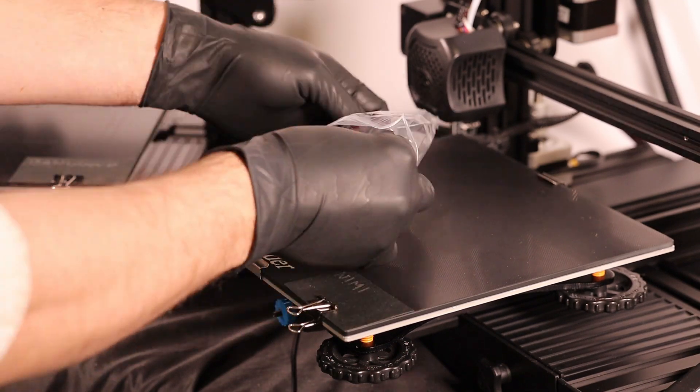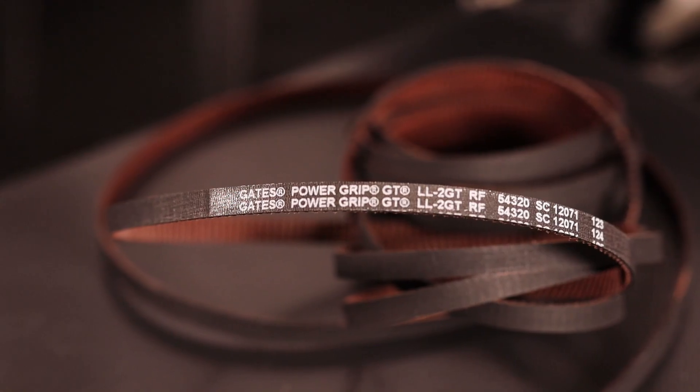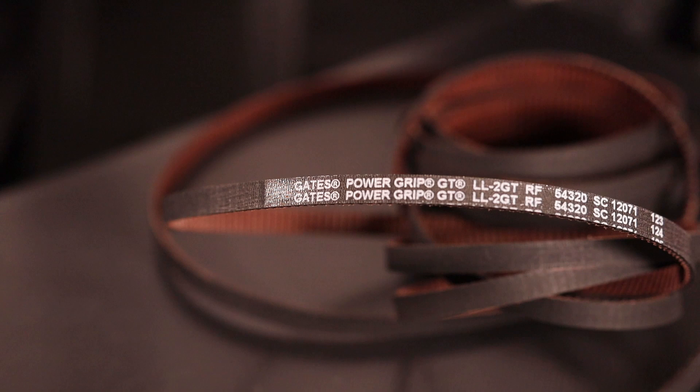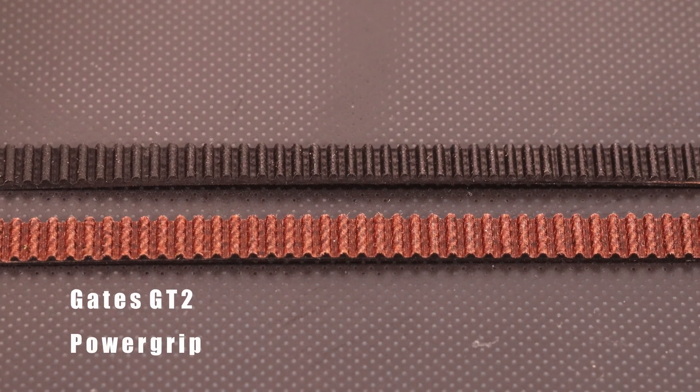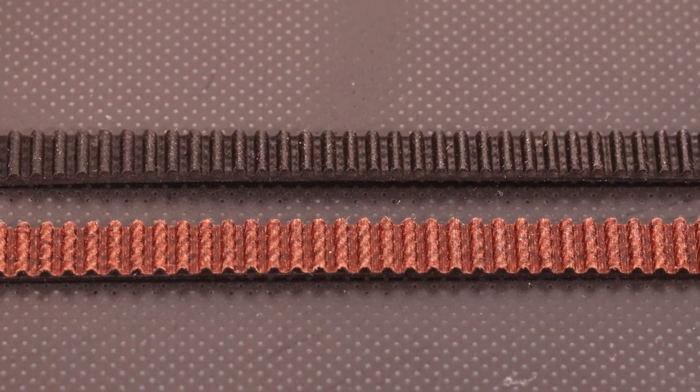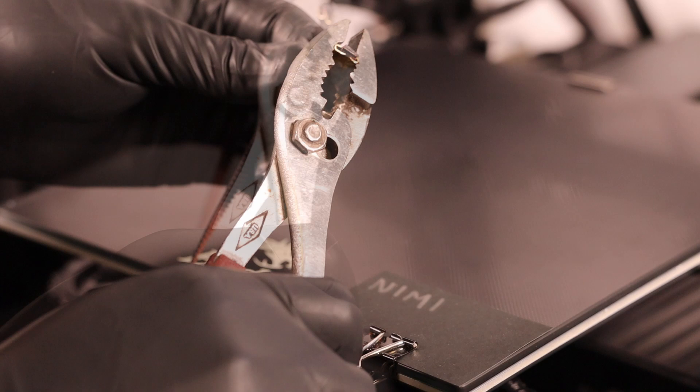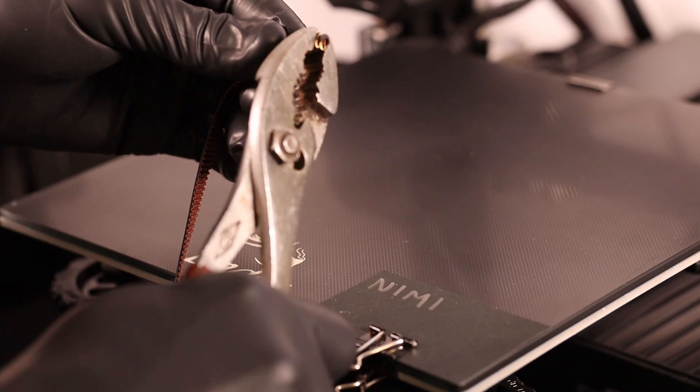Along with good steppers, belts might just make the biggest difference. I've gone ahead and ordered the Gates GT2 power grip belt, which I think might be the best available, but if you know of any better, let me know in the comments. The stock belts have these crimped copper ferrules on them. I've reused them for the new belts as well.